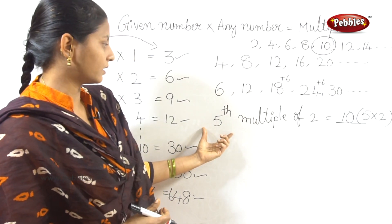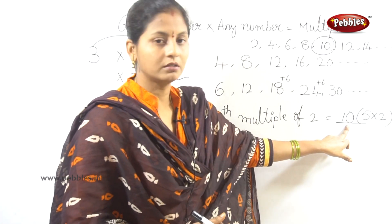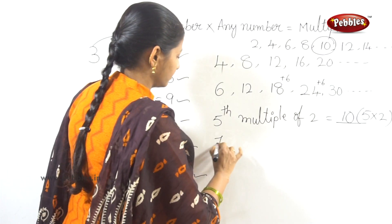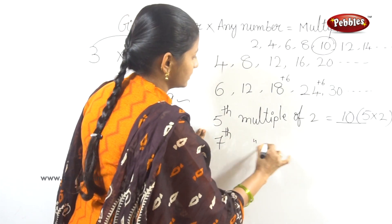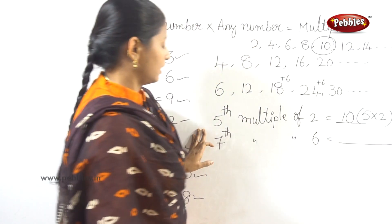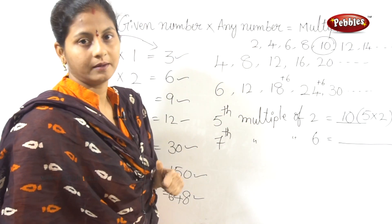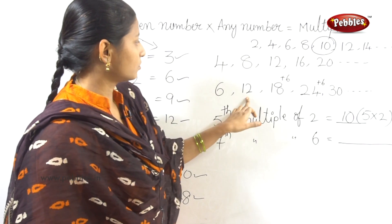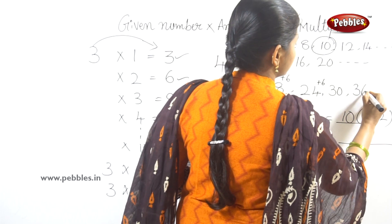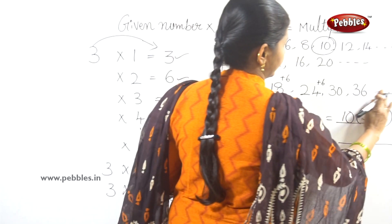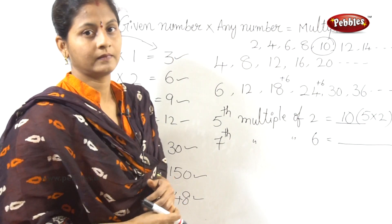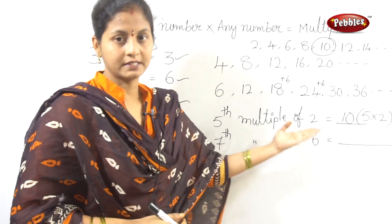Next example: the 7th multiple of 6. Counting through the multiples of 6: 1st, 2nd, 3rd, 4th, 5th, 6th — now you have the 7th multiple, which gives 42 and then 48.